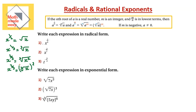So again, when I have any value with an exponent represented by a fraction — a rational exponent — the denominator is the index and the numerator is the power. If the numerator is 1, we don't write it. If it's 2, we write 2. So let's solve some examples.